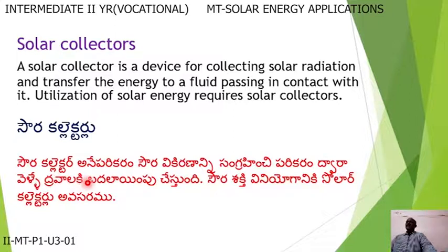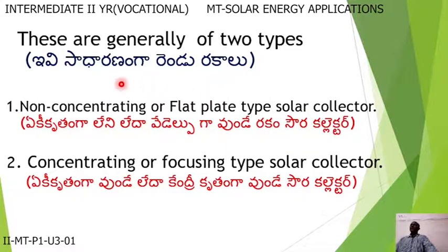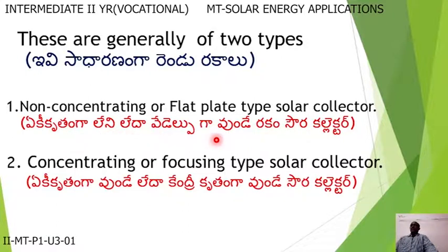Solar collectors are generally of two types: one is non-concentrating or flat plate type solar collectors, and the other is concentrating or focusing type solar collectors.